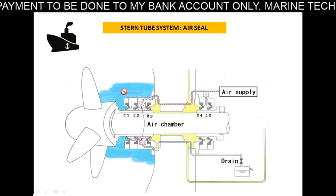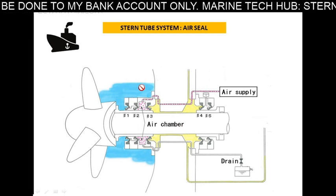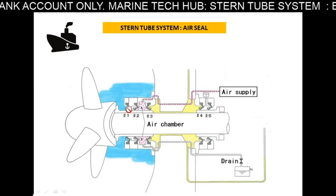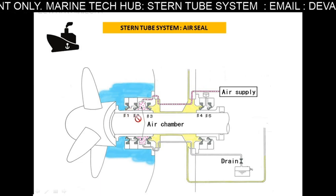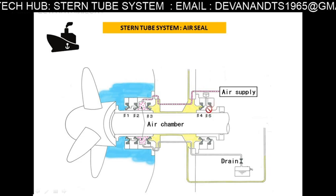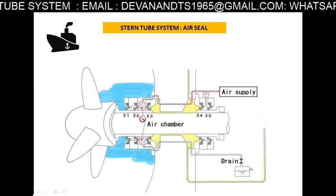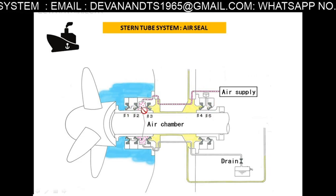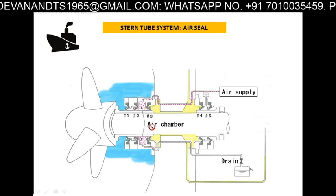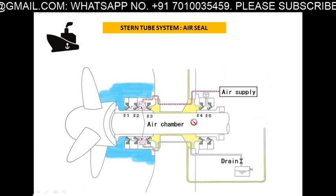The blue color represents sea water. We have sealing rings 1, 2, 3, 4, and 5. These sealing rings protect against sea water coming inside the stern tube system.